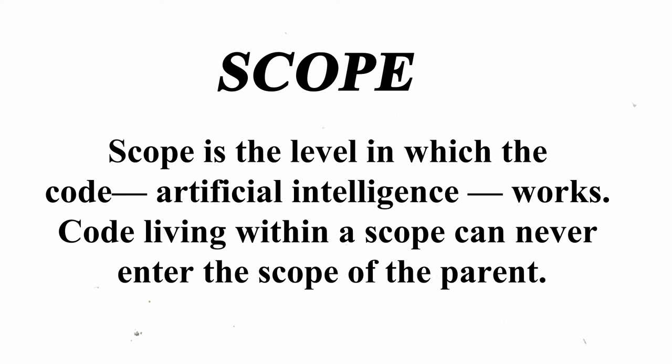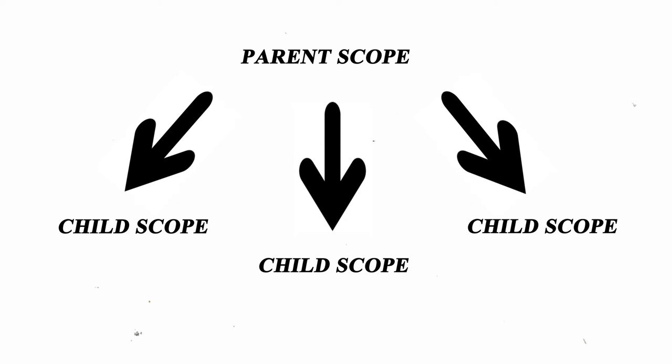Scope is the level at which the code — artificial intelligence — works. Code living within a scope can never enter the scope of the parent, while the context of a parent can conflict with that of its child. This sounds like a good, safe practice. But what if there really isn't a parent scope, or a scope that can enter other scopes at the same access level, or we build access points connecting a scope with multiple access levels for data transfer or control? It might be that the scope is completely sealed, but when the parent scope shows cracks, all security measures vanish.